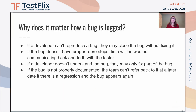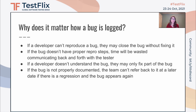So why does it matter how a bug is logged? Well, first of all, if a developer can't reproduce the bug, they might close the bug out without fixing it. If the bug doesn't have proper repro steps, time will be wasted communicating back and forth with the tester. If a developer doesn't understand the bug, they may only fix part of the bug. If the bug is not properly documented, the team can't refer back to it at a later date if there is a regression and the bug appears again.